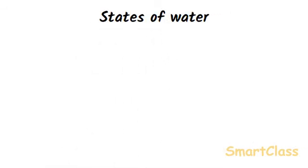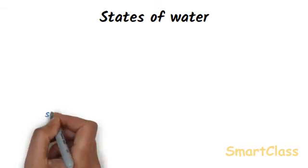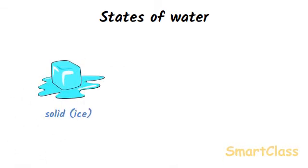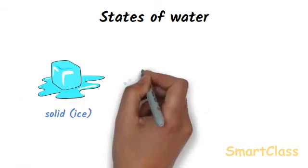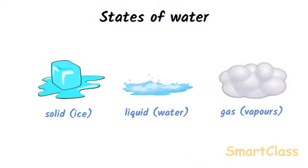States of Water: Water cycle is a very important natural phenomenon which we will be studying later in this chapter. But we should first know the various physical states of water. Water exists in three major states: solid state which is ice, liquid state which is our normal water and gaseous state which is water vapor. Water can be changed from one state to another by heating or cooling.